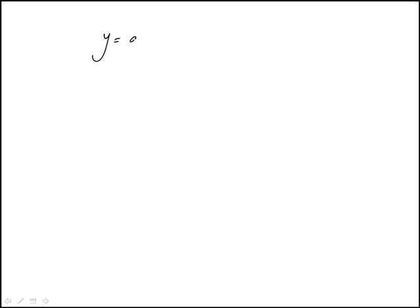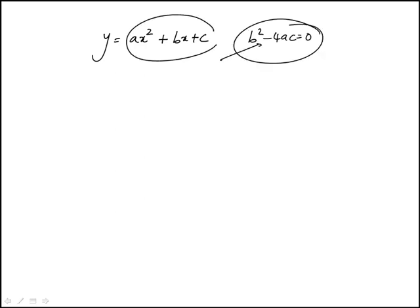So here we're given this equation of a parabola, and we're given the condition b squared minus 4ac is 0. So this condition means that the solutions to this, there are two solutions that are identical.